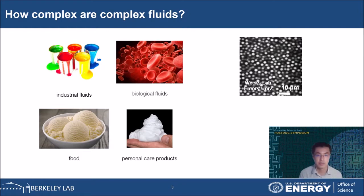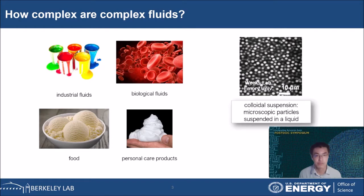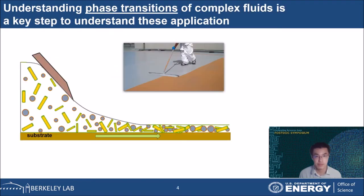For example, shaving foam sits on your hand like a solid and spreads like a liquid when you rub it between your hands. These can be solid and liquid suspensions such as paint, liquid in liquid emulsion such as salad dressing, or air in liquid foams. My research focuses on colloidal suspensions — microscopic solid particles suspended in a solvent. They are so small that they undergo Brownian motion and diffuse in the solvent. Understanding phase transitions of complex fluids is a key step to understand these applications.